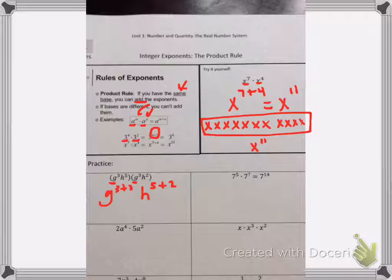On our h's we'll have h to the fifth plus h squared, so two. If we combine our powers now, we're going to have g to the sixth, because three plus three is six, h to the seventh for our answer.